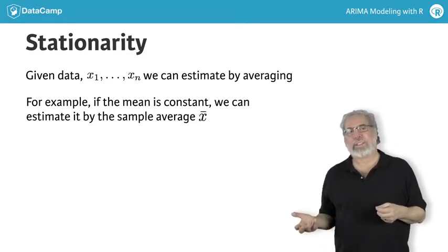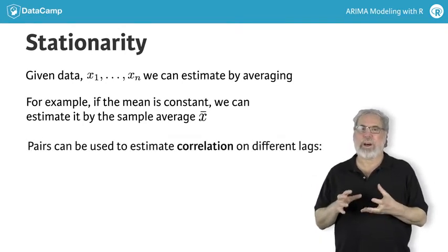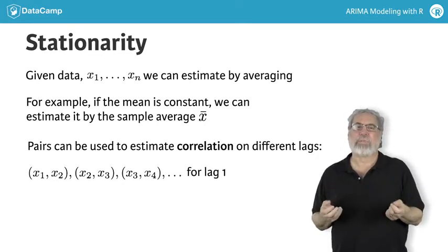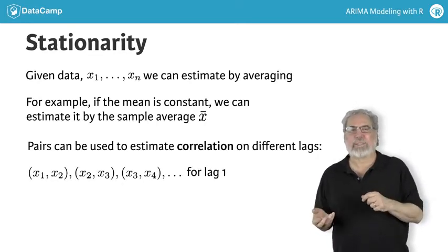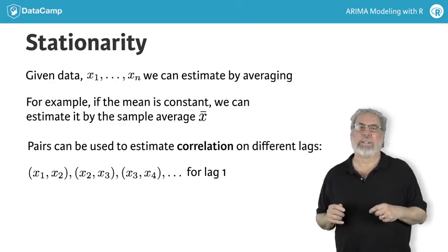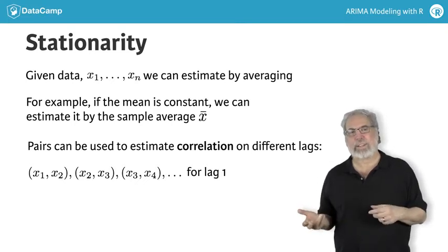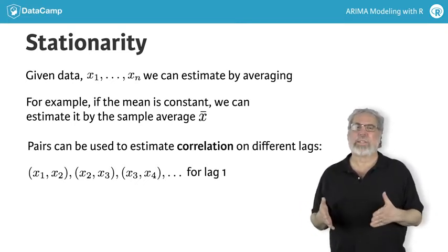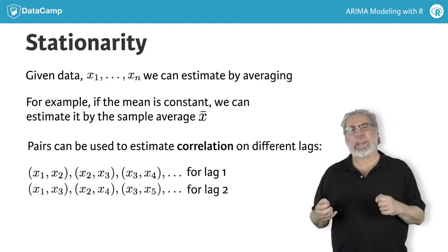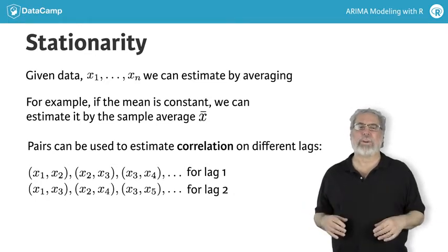And if the correlation structure is constant, then we can use all pairs of data that are one time unit apart — say x1 and x2, x2 and x3, and so on — to estimate the lag 1 correlation. This works because the relationship between contiguous values of the series remains the same over time. Similarly, we can use x1, x3, x2, x4, and so on to estimate the lag 2 correlation.